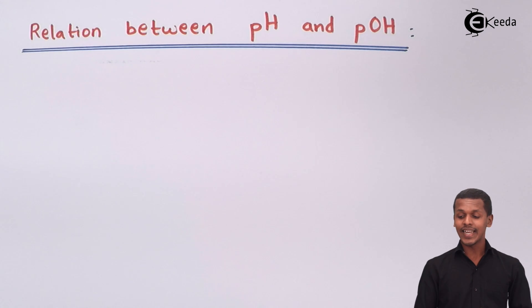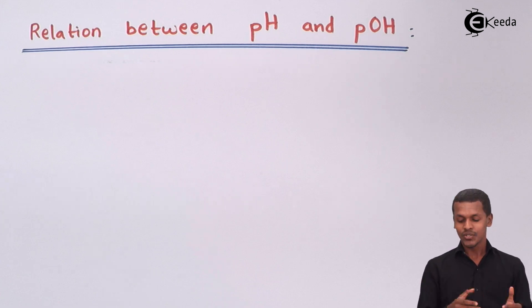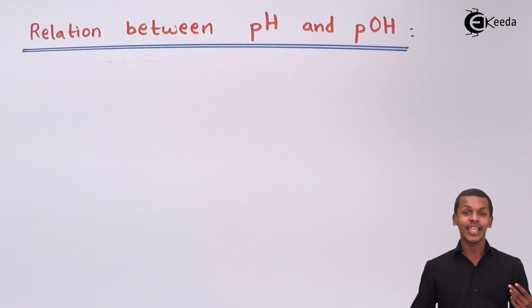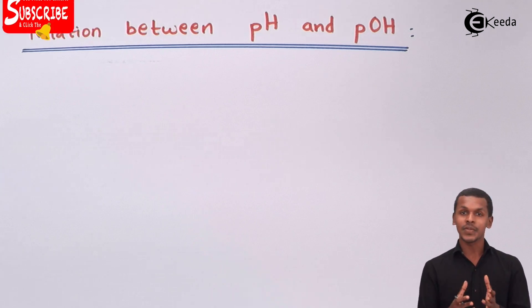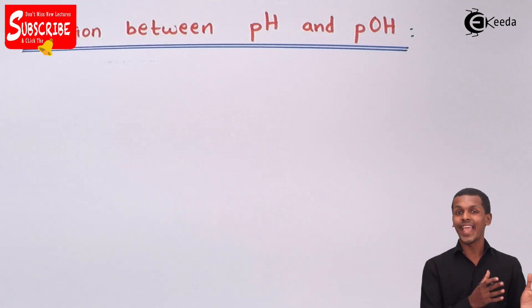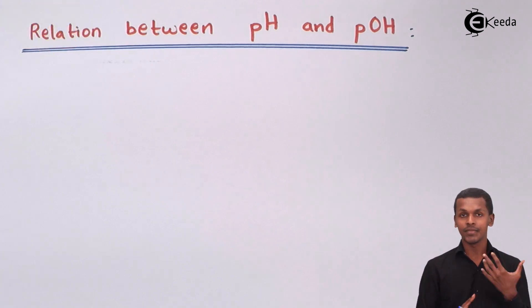Before understanding the relation between pH and pOH, in the previous lecture we also discussed about the ionic product of water. That is the reason we are going to talk about the ionic product of water, because water is the only substance which consists of H⁺ and OH⁻ ions in equal proportion.